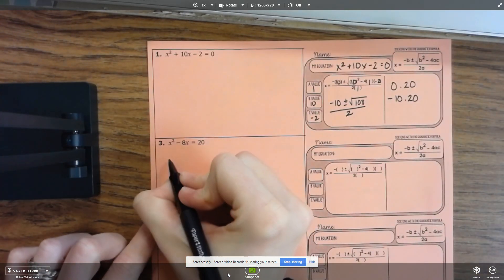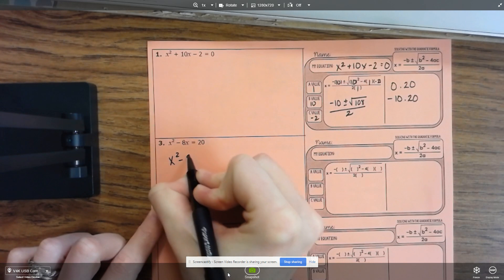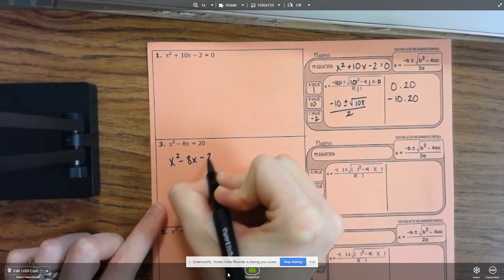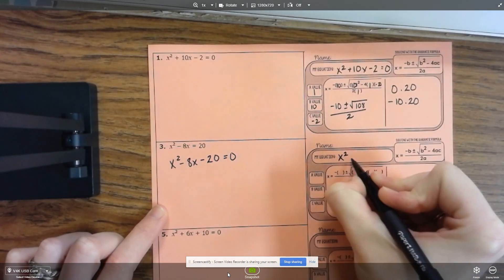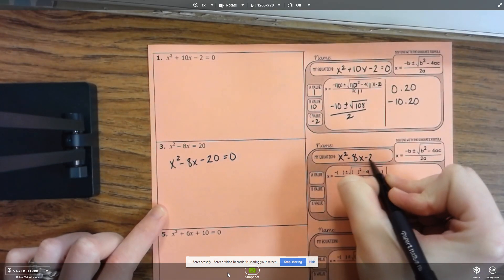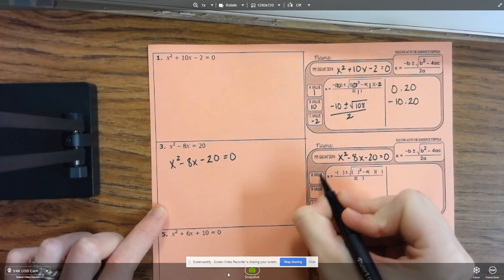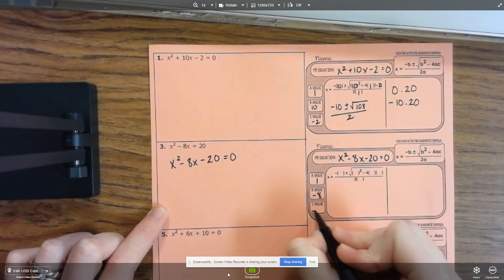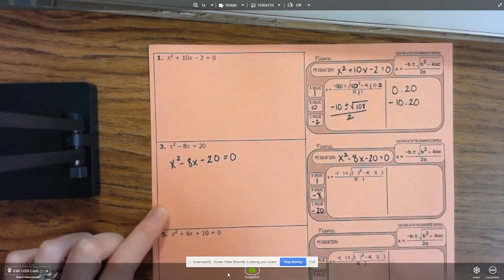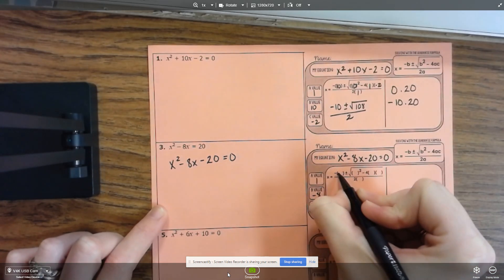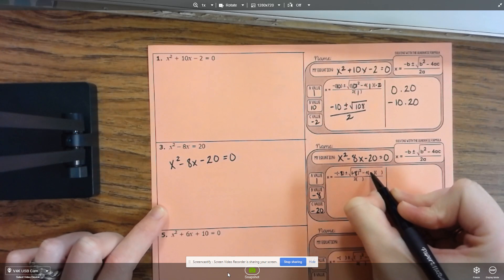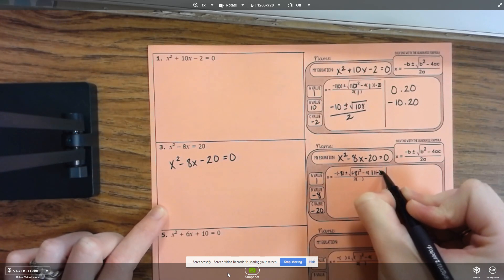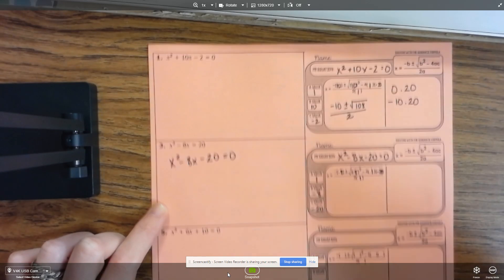So on this one, what we've got to do is we've got to move the 20. So a is 1, b is negative 8, c is negative 20. So here I've got a negative negative 8, negative 8 squared, minus 4, a, and c, and then a is a 1.